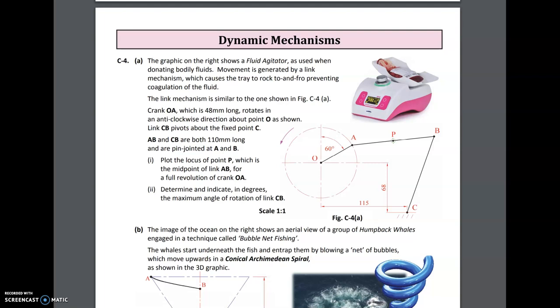The link mechanism is similar to the one shown in Figure C4. Crank OA, which is 48 millimeters long, rotates in an anti-clockwise direction about point O as shown. Link CB pivots about a fixed point at C.